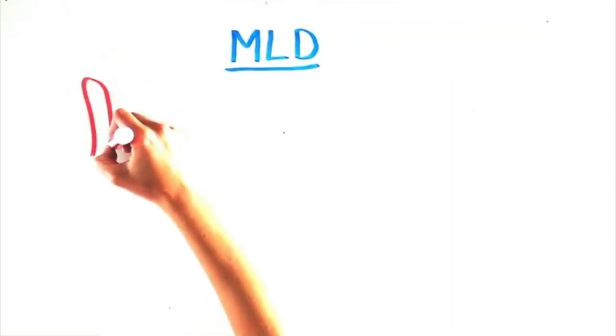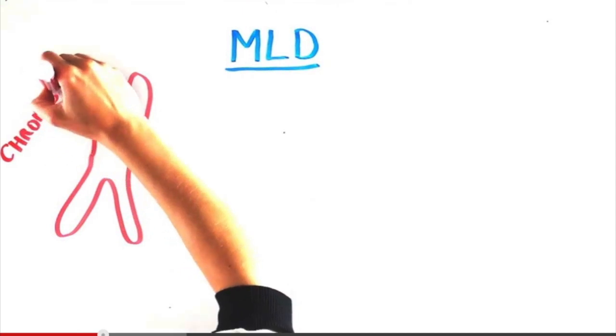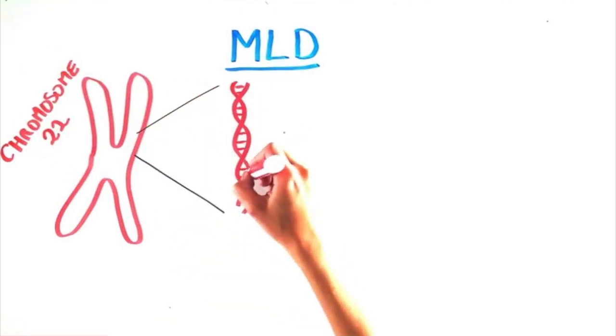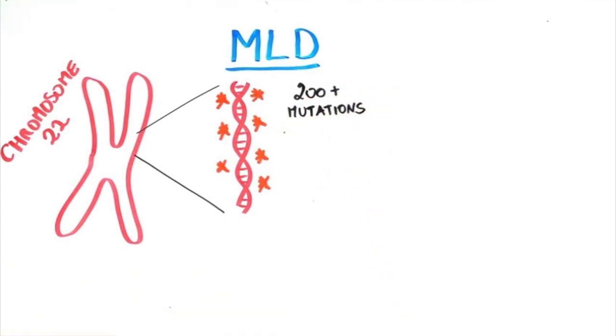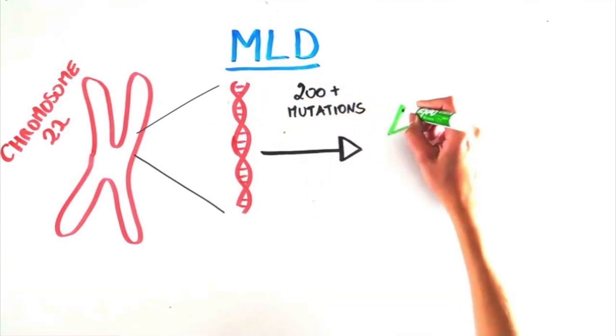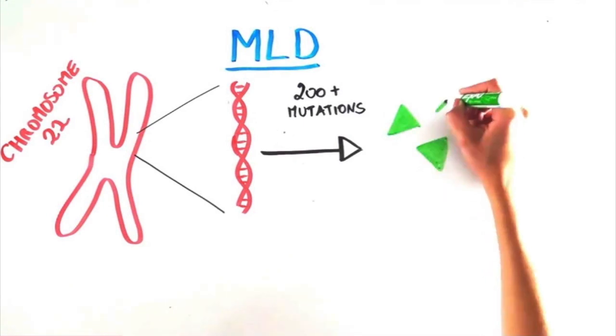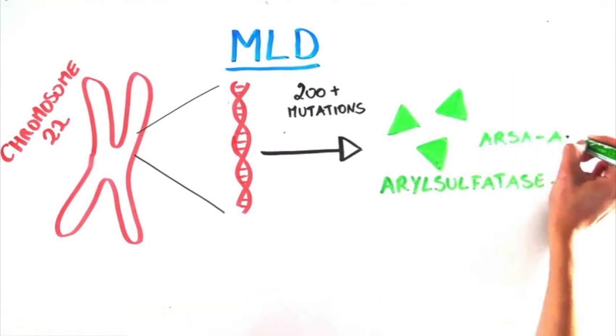Let's delve into the biology behind MLD. It is caused by a mutation, or a change in the DNA sequence, on chromosome 22. There are over 200 different mutations that can cause MLD. The gene mutated is responsible for making an enzyme called arylsulfatase A, abbreviated ARSA-A.